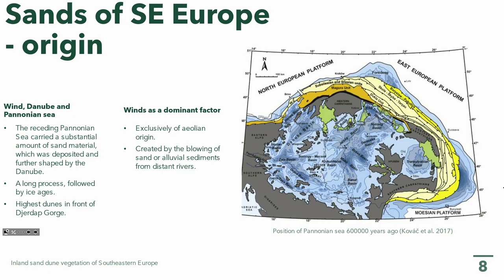When we talk about southeastern Europe, we have two main theories about the origin of sands here. The first theory includes three main factors: wind—mostly the southeastern wind called Koshava—the Danube River, and the Pannonian Sea. Those three factors together, in a long process followed by ice ages, formed the main sand dunes in southeastern Europe. According to other authors, wind alone was the main and only factor.